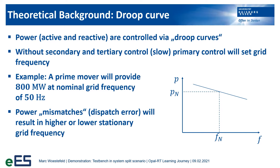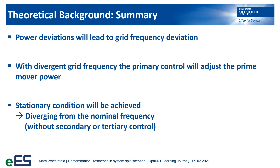When the frequency drops, it provides more power. Vice versa, when there is more power needed, it leads to a lower frequency. To summarize, power deviations will lead to grid frequency deviations, and grid frequency deviations will lead to an adjustment of the power in-feed from the prime mover. In the end, there will be a stationary grid frequency, but it will not be the nominal frequency without any additional control forms.